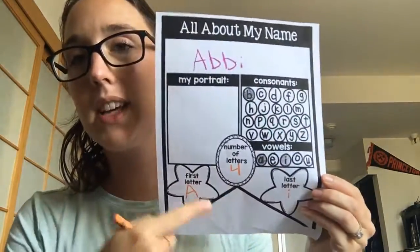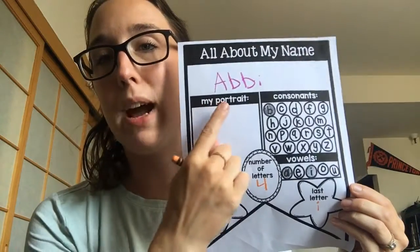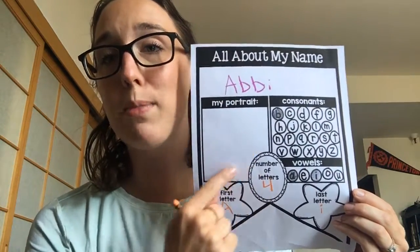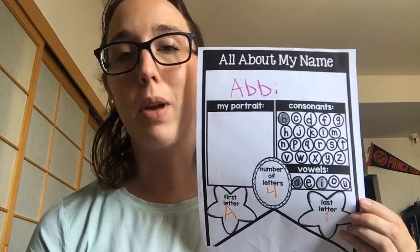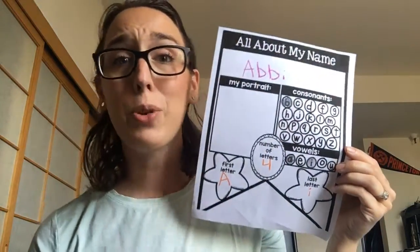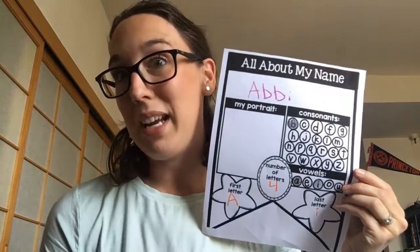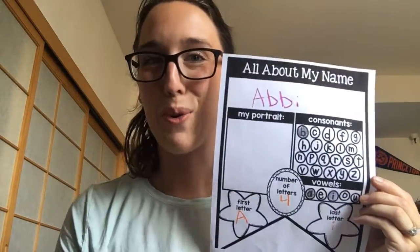Now that I have this part done, I get to go to the fun part, which is my portrait. You can draw a small picture of yourself in this box using your crayons, markers, or highlighters. When you are done, you can cut it out right along this line and it'll make a fun banner. You can put it up on your wall or next to your desk or anywhere you'd like. You're also going to share this at our morning meeting, so I can't wait to see all of your work. Bye!